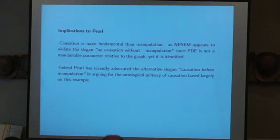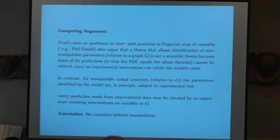So what is the implication? Well, Judah realized he had identified a parameter that doesn't represent any intervention, so he said causation is more fundamental than manipulation. His NPSM model appears to violate the slogan, no causation without manipulation, since the pure direct effect is not a manipulable parameter relative to the graph, yet it's identified. He can learn a causal effect.